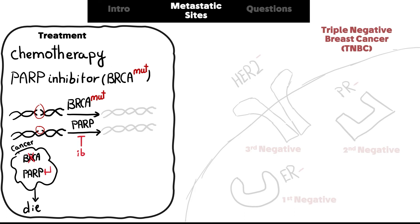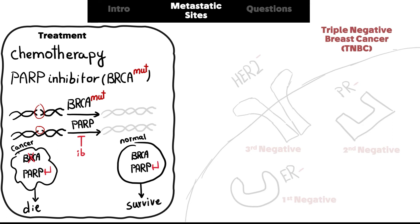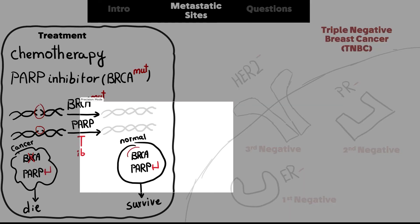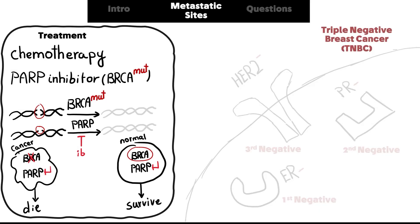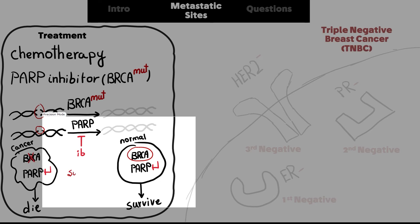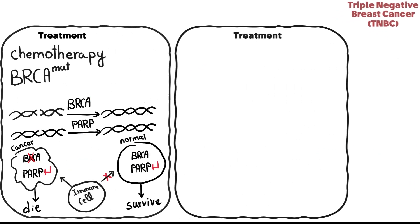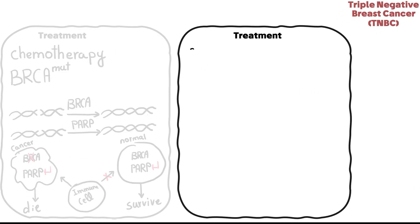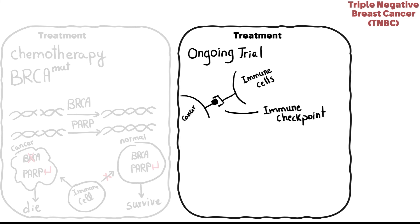In contrast, a normal cell with a functioning BRCA gene can still survive when PARP is inhibited, because it still has a functional DNA repair enzyme — BRCA — available. This concept of selectively killing cancer cells while sparing normal cells is called synthetic lethality.